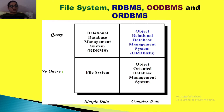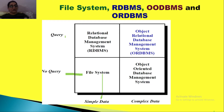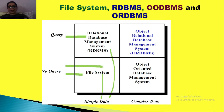In case you need a system where you are not supposed to run queries and the data is simple, then a file system is applicable. If we have a situation where we need to run queries but have simple data which can be arranged in tables and relations, then RDBMS is applicable. And where queries are fewer but data is complex, an object-oriented database management system can be implemented.